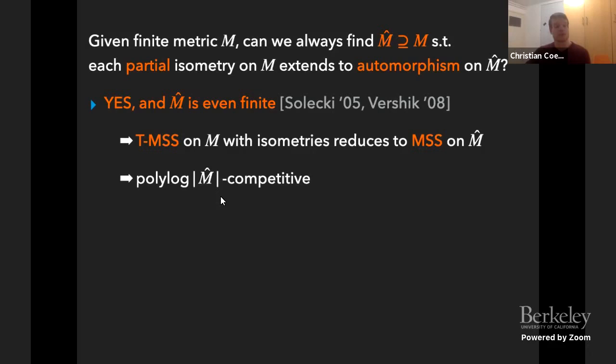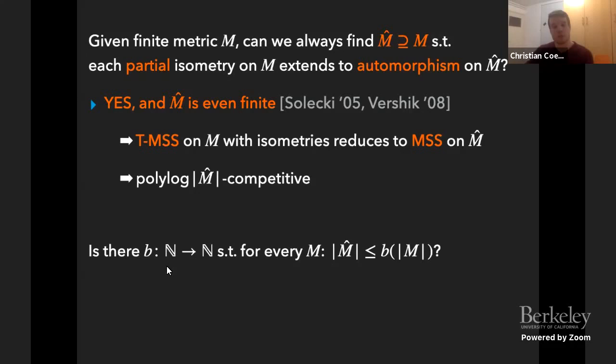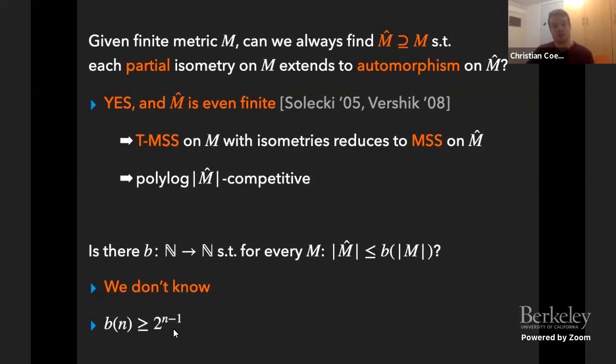This means that the problem TMSS with isometry transformations reduces to just MSS on this extended space. The competitive ratio, because of what is known about Metrical Service Systems, is therefore polylogarithmic in the size of this extended space. The next question is what is the size of M-hat. Even though it is known that M-hat is always finite, we don't know whether there is a function bounding its size as a function of n. We do answer this for some special cases of metrics and isometries. There is a lower bound showing the blow-up is at least exponential, which if tight would mean there is a polynomially competitive algorithm for TMSS with isometries.